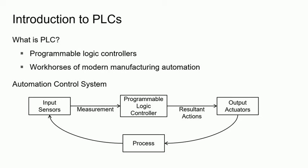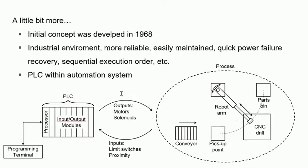There will be a more detailed diagram on the next slide. Now let's look at this more detailed diagram. PLC is represented by those blocks, which consist of processors and several input or output modules. The testbed is made up of a robot arm, a CNC drill, and several conveyor systems. Parts are transferred on the conveyors, and once a single part arrives at a position called the pickup point, it triggers the proximity sensor, which sends a signal to the PLC telling it a part has arrived.